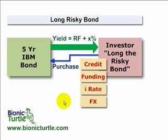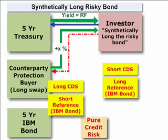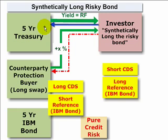Now let's compare that outright long position in the risky bond to a synthetic position. In this case, the investor on the right enters into two transactions. The first transaction is to purchase a riskless or risk-free instrument — typically the U.S. Treasury. So the blue line represents the purchase of that riskless instrument, in exchange for a yield that is only the risk-free yield.